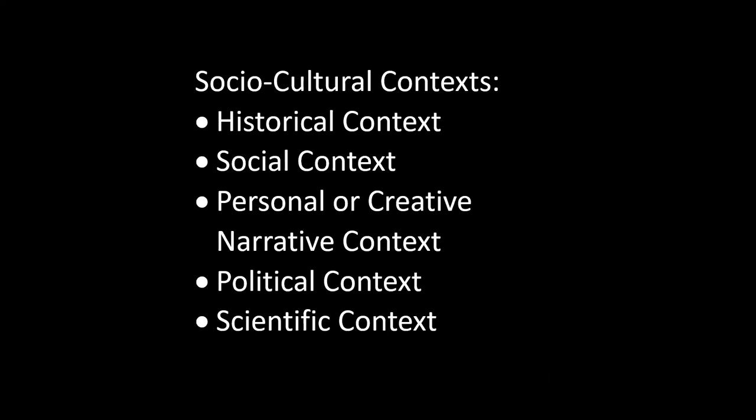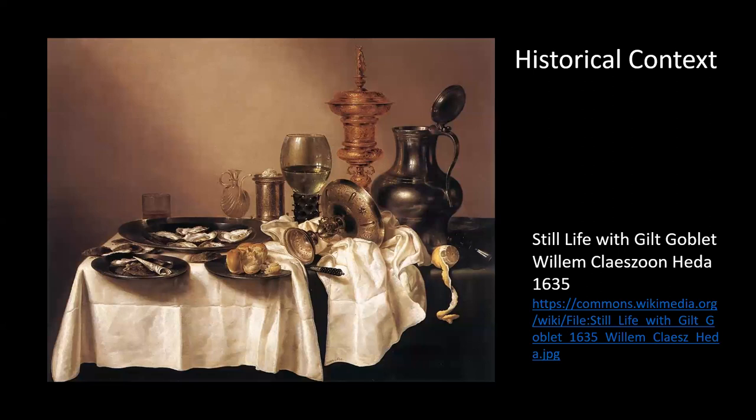The sociocultural contexts are historical, social, personal or creative narrative context, political context, and scientific context. You will notice some overlap in this textbook between different chapters, where the authors seem to be talking about the same thing. But bear in mind, they're trying to approach art from several different directions in order to determine a kind of theory or function of art. The overlaps are intentional — it's just a matter of approach, which differs at different points in the textbook.